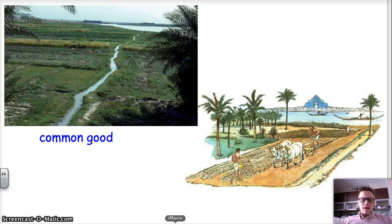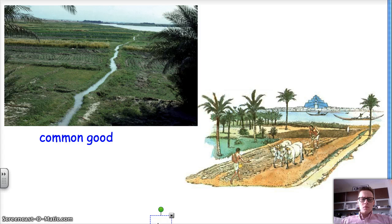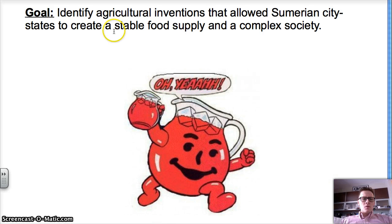So today, our goal was to identify agricultural inventions that allowed Sumerian city-states to create a stable food supply and a complex society. We've got two. We've got the irrigation system and the plow. We've got the water for the Kool-Aid and we've got it stirred.